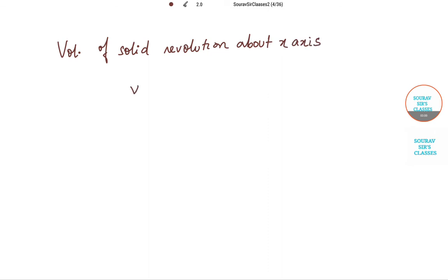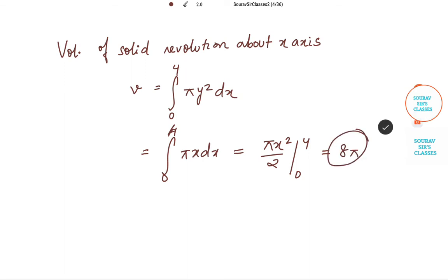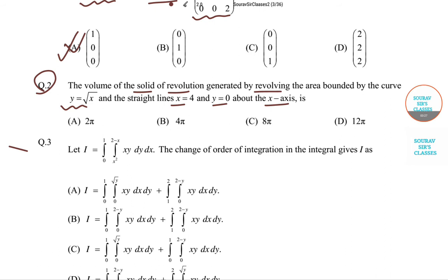...will be, I'm denoting it by V = ∫₀⁴ πy² dx. This is the formula. We can rewrite this as ∫₀⁴ πx dx. This can be written as πx²/2 from 0 to 4, and this will be 8π. So the correct answer...